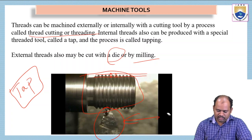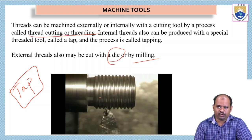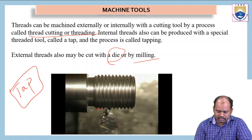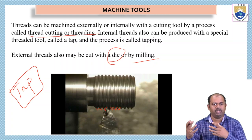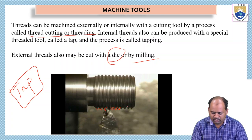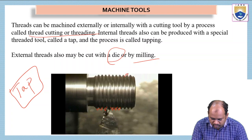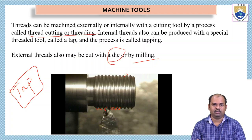Internal threads can be done with the help of a tapping tool — we are going to see what tapping is in the coming lectures. Tapping uses a very hard material which has threads on it. When we make this tap rotate into a hole, we can simply form thread cuts. External threads can also be done by other processes, like with the help of a die or by milling.